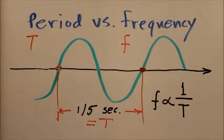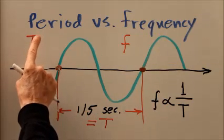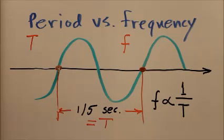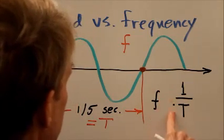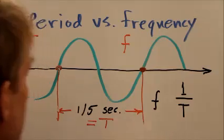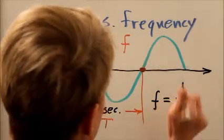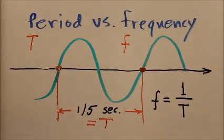Period and frequency are related inversely. The frequency is proportional to 1 over the period, and conversely the period is proportional to 1 over the frequency. We represent period with an uppercase letter T, and frequency as a variable as the lowercase letter f. If we express the frequency in hertz, that's cycles per second, and the period in seconds, then the frequency is 1 over the period.